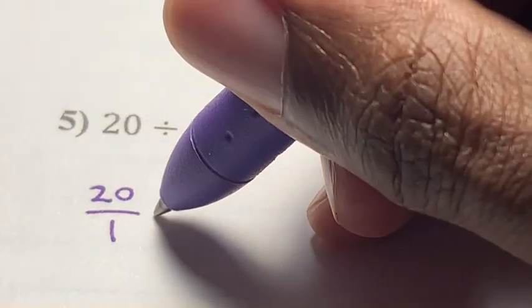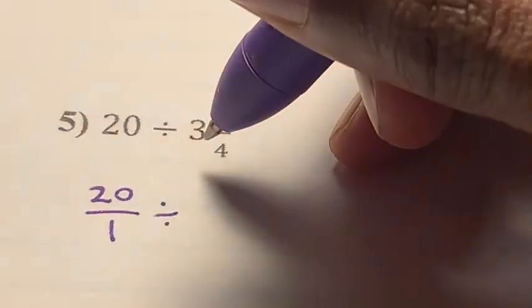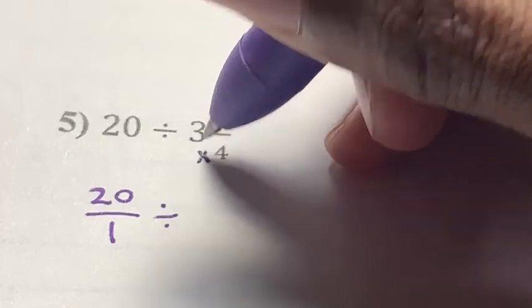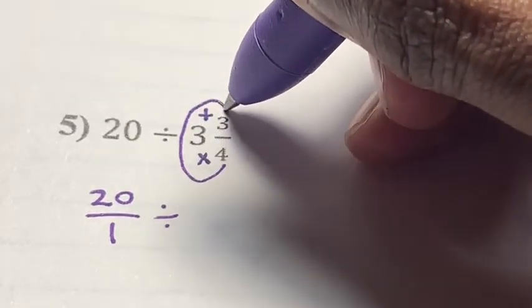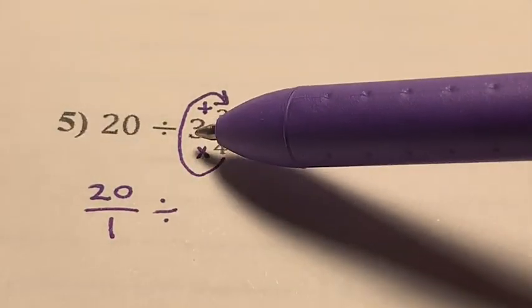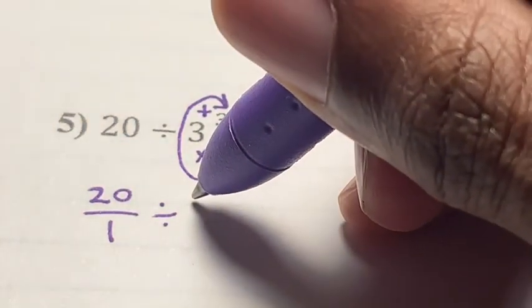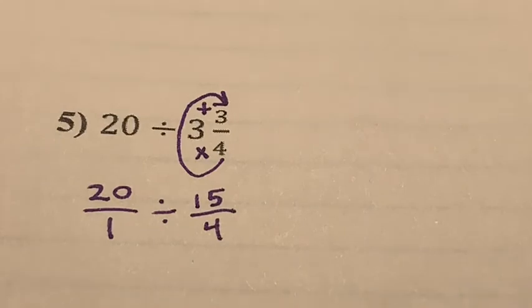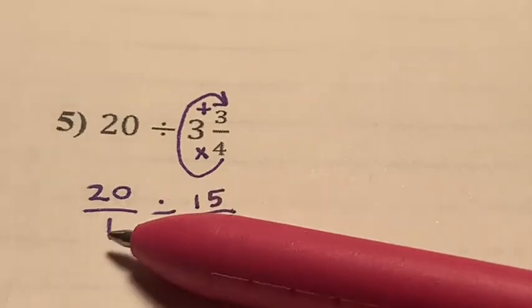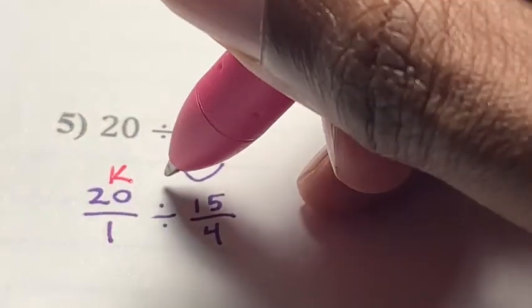We're going to keep the division sign the same and convert the mixed number three and three-fourths into an improper fraction: multiply the denominator and the whole number, then add the answer to the numerator. Four times 3 is 12, and 12 plus 3 is 15 — that's 15 over 4, keeping the denominator the same. Now that we have two fractions, we can do keep, change, flip.